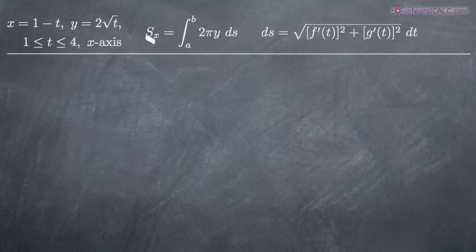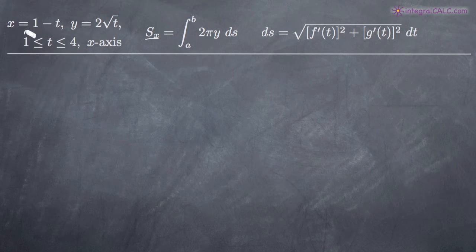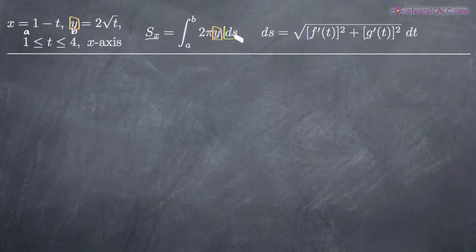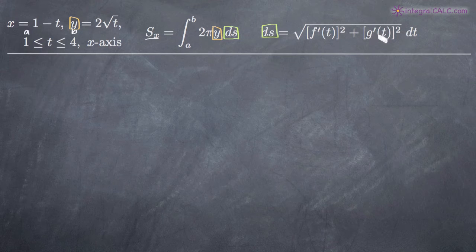The formula we're going to use is given here by S of x, meaning the surface area found by revolving the parametric curve around the x-axis. We're going to take the integral from a to b — a and b being defined by the range for t, one to four — of two pi y ds. We need to make a couple of substitutions: we'll substitute two times the square root of t in for y, and we'll also make a substitution for ds based on the ds formula involving f prime of t and g prime of t.